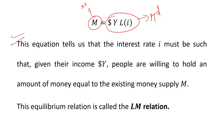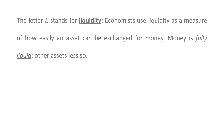This equilibrium relation is called the LM relation. Now we can see L and M in the equation. The letter L stands for liquidity. Economists use liquidity as a measure of how easily an asset can be exchanged for money. Money is fully liquid; other assets less so.